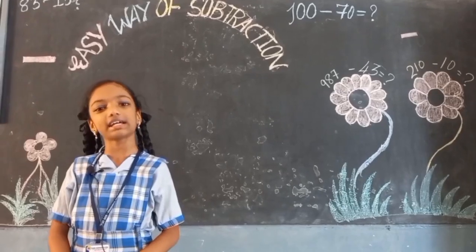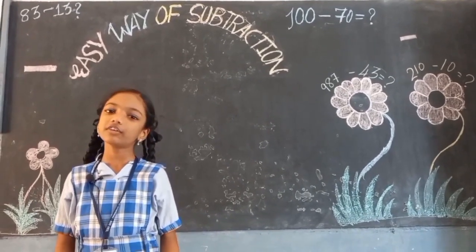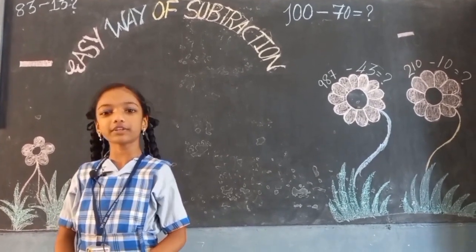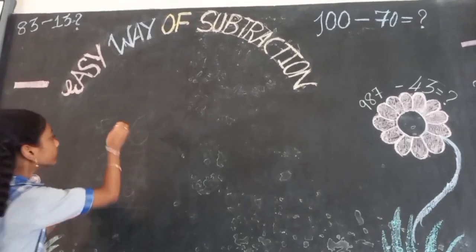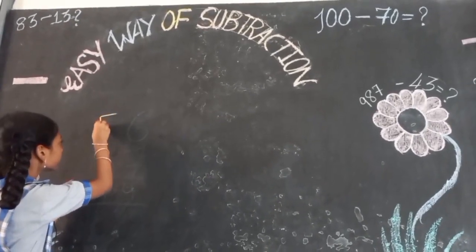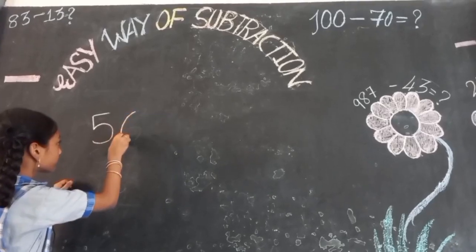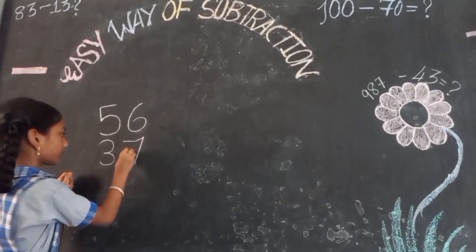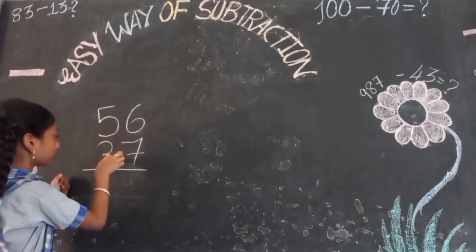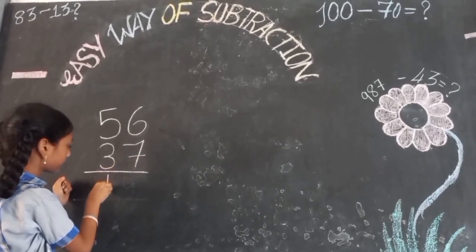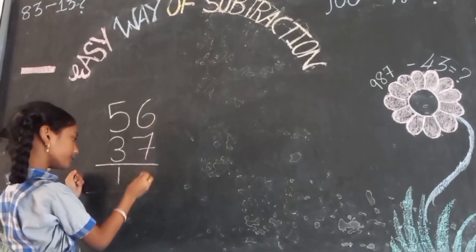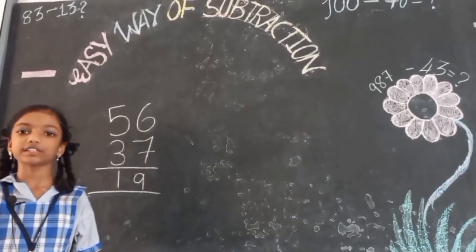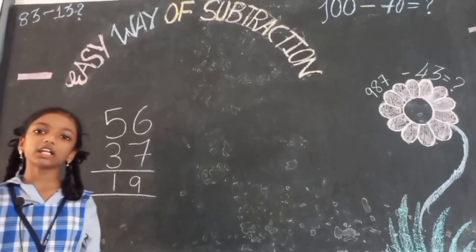Friends, in this method I can do subtraction faster and easier without borrowing. For example, to subtract 37 from 56. Here is your answer in just a few seconds. Let me explain it.